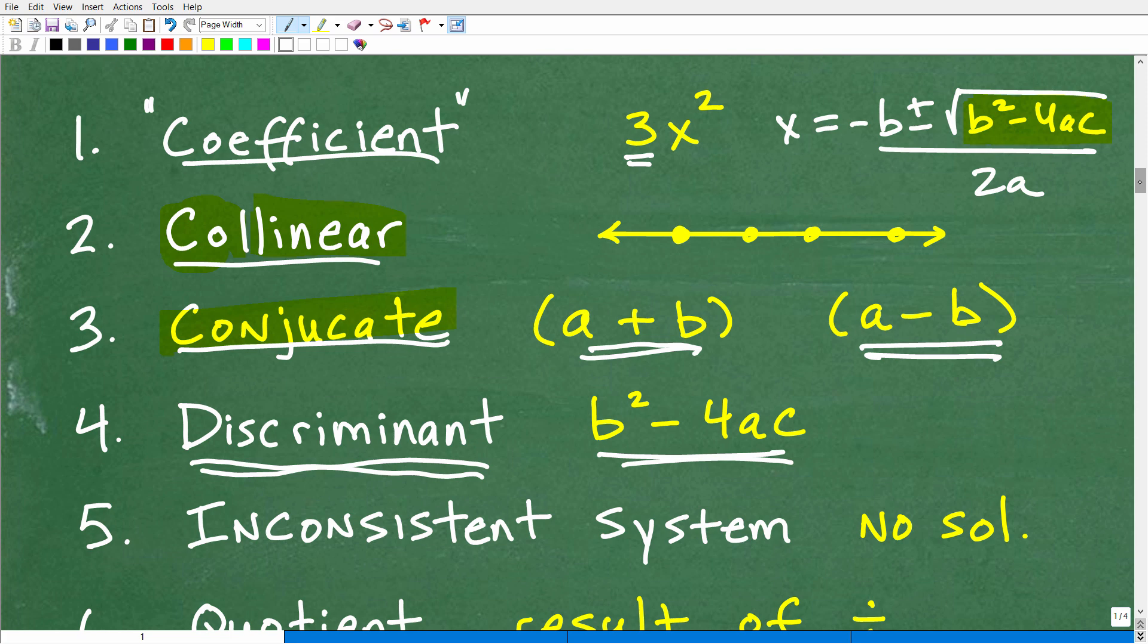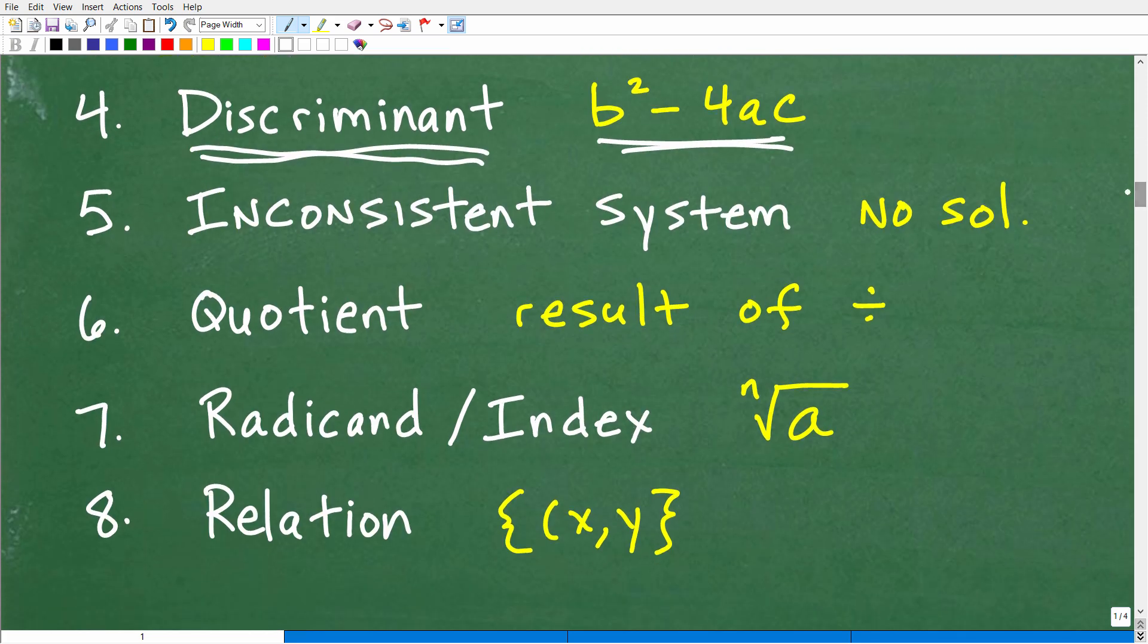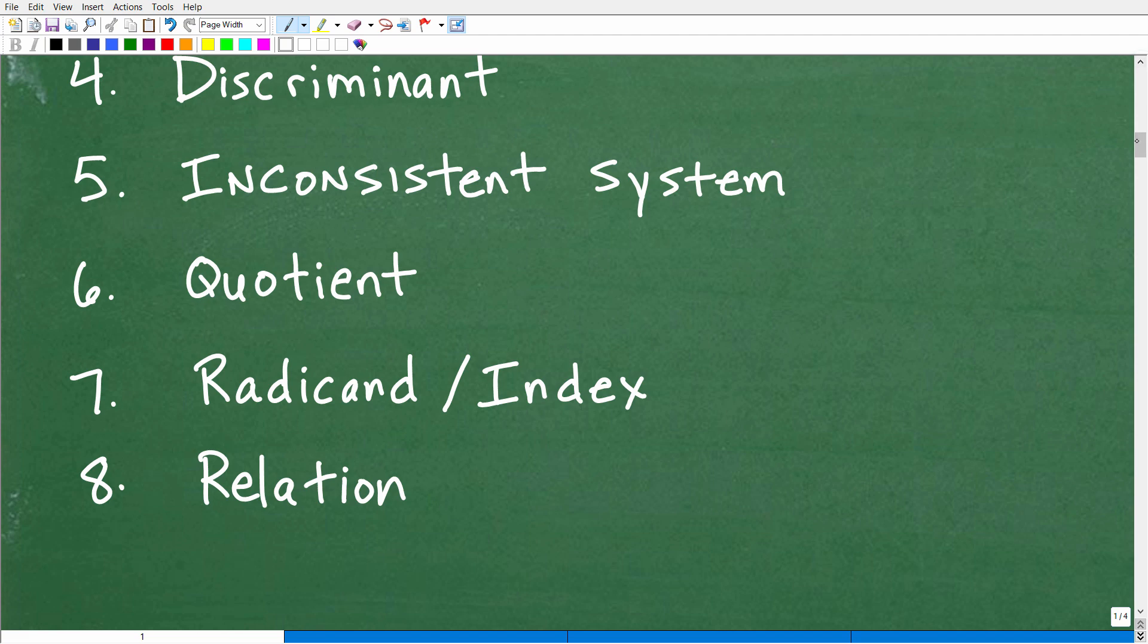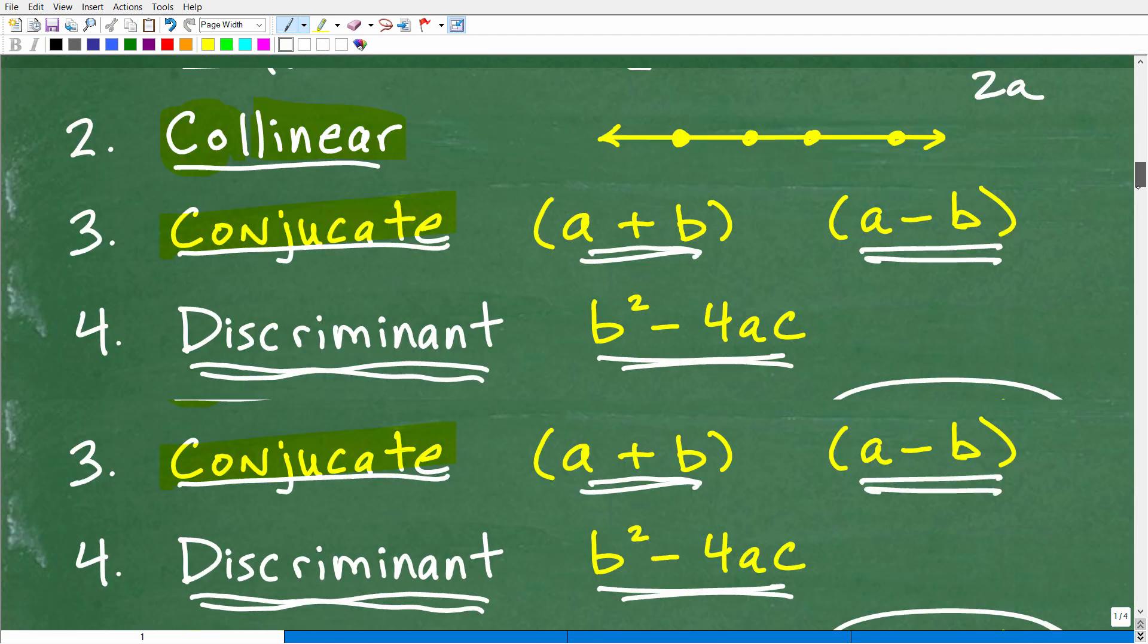All right, let's move on to our next term or phrase, inconsistent system. An inconsistent system. Well, this is a system that has no solution. No solution.